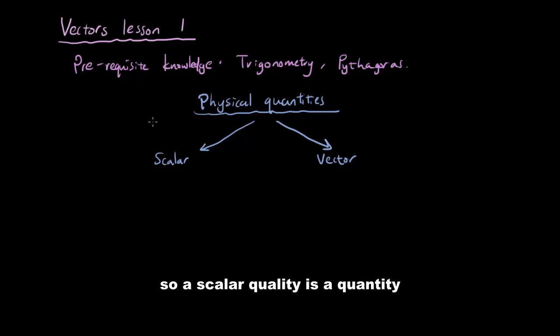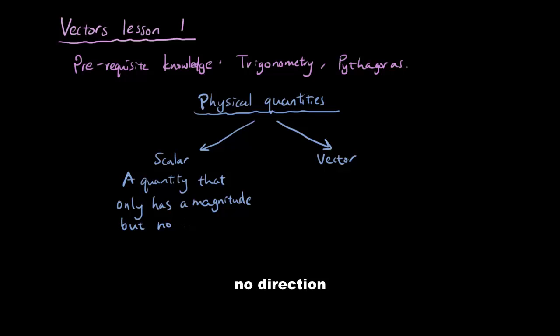So a scalar quantity is a quantity that only has a magnitude, but no direction. A quantity that only has a magnitude, but no direction.